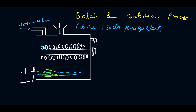The impurity, which is insoluble in water, settles as precipitate shown in green. The soft water automatically rises up and is removed from here. All remaining sludge is removed from the bottom after the water is softened.